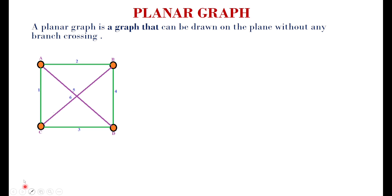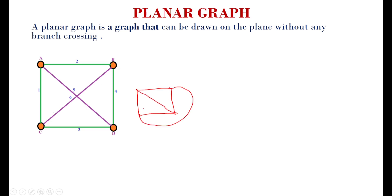Now I am going to explain. Have to draw the nodes — there are four nodes here. I have to draw the branch, then take the next branch and draw like this. Is there any branch crossing in this graph? No. This is the planar graph.